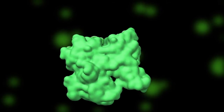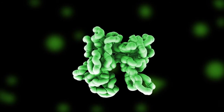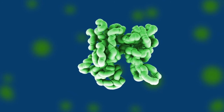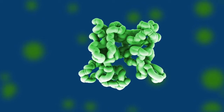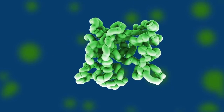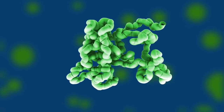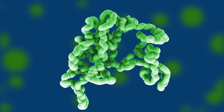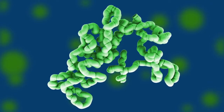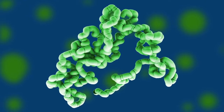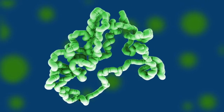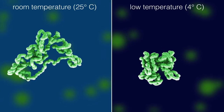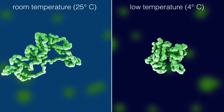Cell lysis disrupts the carefully controlled cellular environment. This can cause the unwanted addition of protein modifications, protein unfolding, or degradation by allowing certain enzymes involved in these processes to have unregulated access to their targets. To prevent unwanted modifications, unfolding, and degradation, lysis is performed at a low temperature and in the presence of various enzymatic inhibitors.